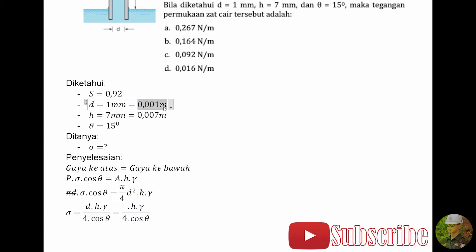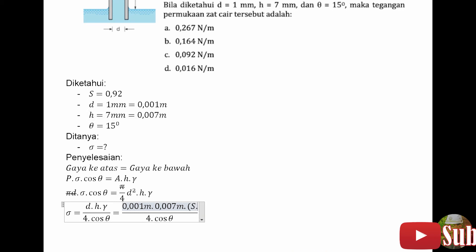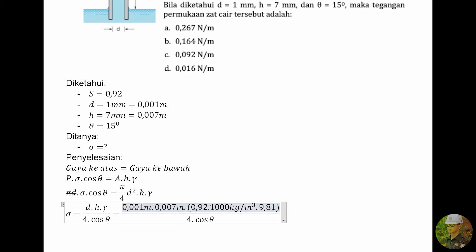Selanjutnya kita input nilai yang diketahui. D sebesar 0,001 meter, H sebesar 0,007 meter, dan row cair itu adalah S dikalikan row air dikalikan dengan percepatan gravitasi. S nya adalah 0,92, row air sebesar 1000 kilogram per meter pangkat 3, percepatan gravitasi adalah 9,81 meter per detik dikuadratkan. Cos nya adalah 15 derajat.